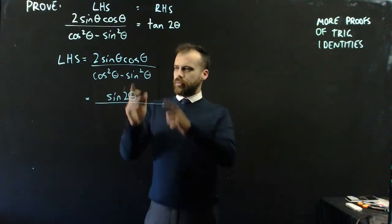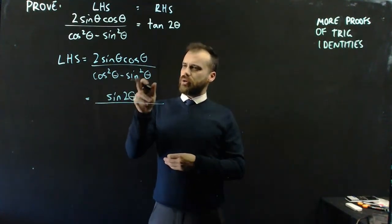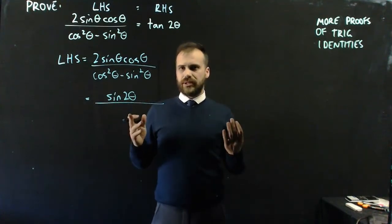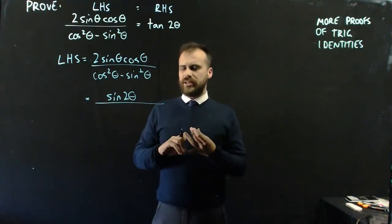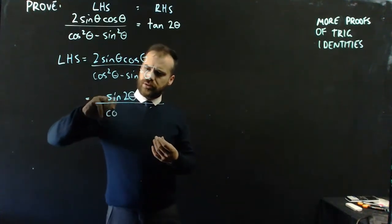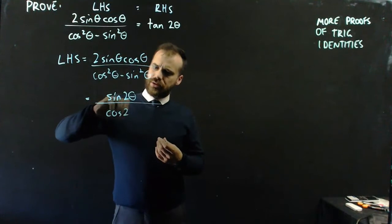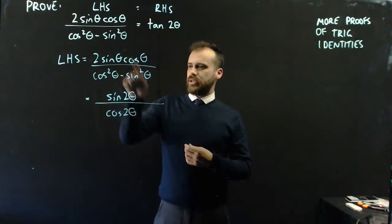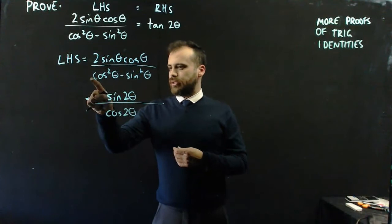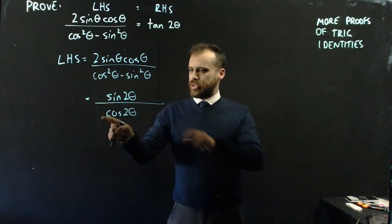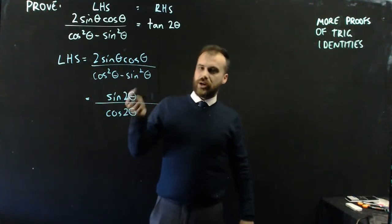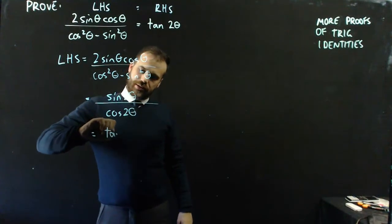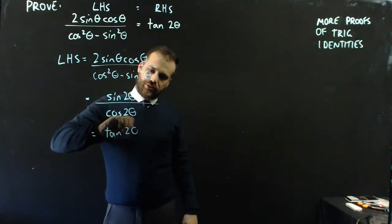Now, what about the bottom? Cos squared theta minus sine squared theta — isn't that a double angle identity? It's cos 2 theta. So that's a double angle identity which results in that. That's a double angle identity that results in that. And sine 2 theta over cos 2 theta is equal to tan 2 theta.